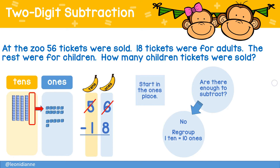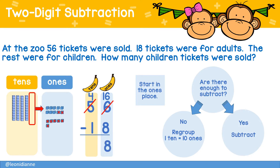Five tens is now four tens, but six ones is now sixteen ones. Now we have enough to subtract: sixteen minus eight equals eight, and four tens minus one ten is three tens. There were 38 tickets sold for children.